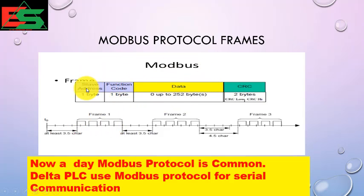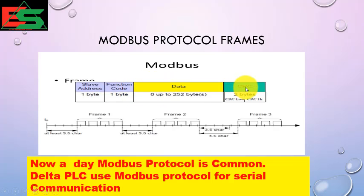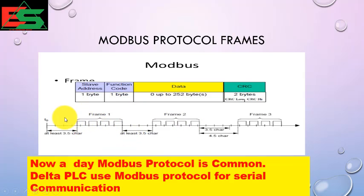The Modbus protocol frame consists of: a slave address, a function code, data (shown in yellow), and a CRC of 2 bytes. In RTU Modbus communication you can see frame 1, frame 2, frame 3 — every frame has one unit, and both frames have a distance of 3.5 character times. This is one protocol frame of Modbus.